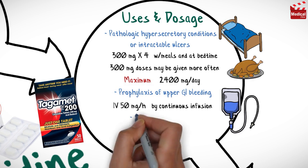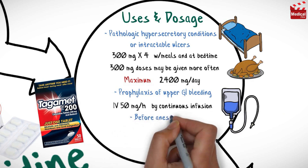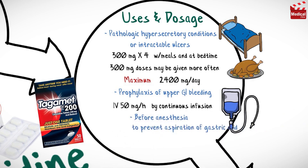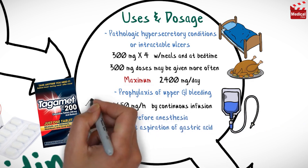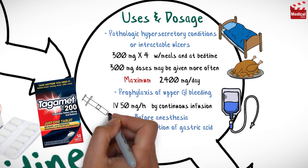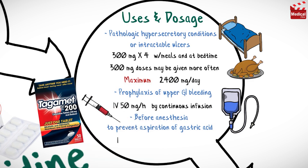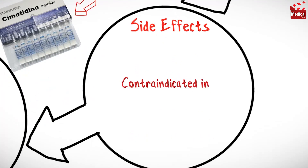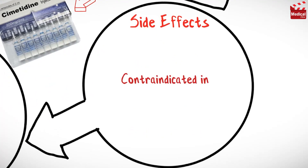Cimetidine is also used before anesthesia to prevent aspiration of gastric acid. A dose of 300 mg given 60 to 90 minutes before induction with anesthetic is administered by intravenous injection.